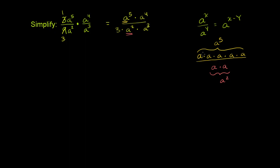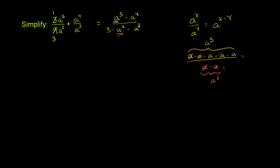We can divide both by a times a, canceling two a's from the numerator and leaving just 1 in the denominator. That leaves us with a times a times a, which is a to the third power — or a to the 5 minus 2 power. We had 5 a's and cancelled 2, giving us 3.